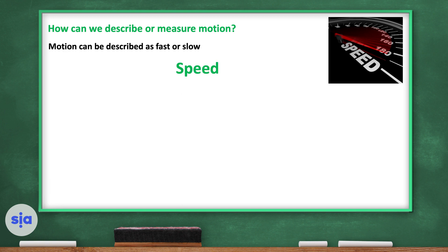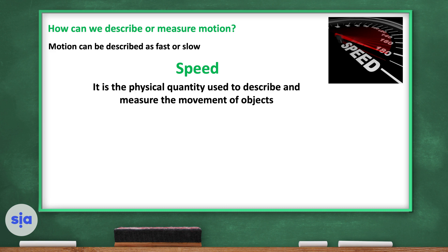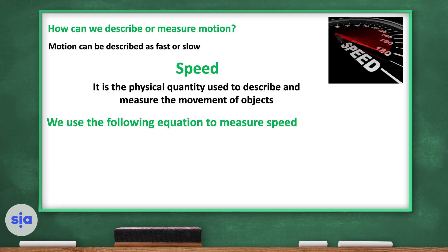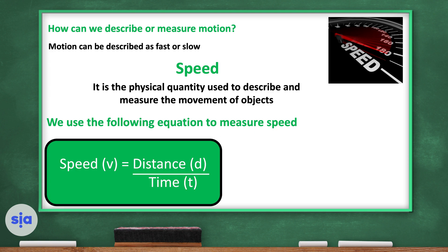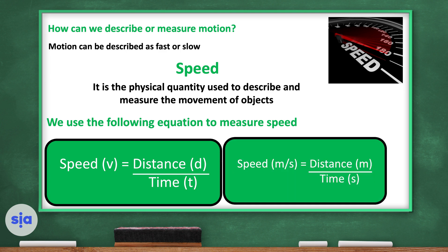Can we describe or measure motion? Motion can be described as fast or slow by speed. Speed is how fast or slow the motion is — it's a physical quantity used to describe and measure the movement of objects. We use the following equation to measure speed: we get the distance and the time needed for that distance to be covered.